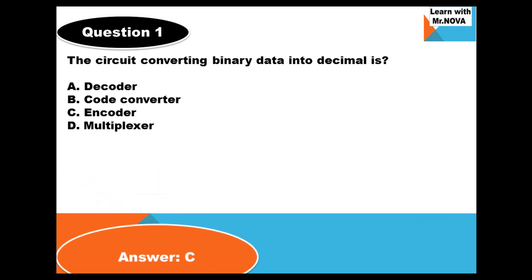The answer is C. Encoder. An encoder is a circuit board which converts binary data into decimal. That is from base 2 to base 10.